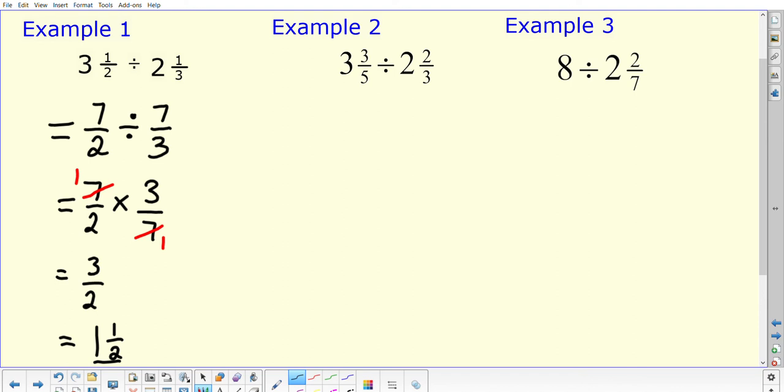With the second example, if you do the same thing, you can either pause the video again, have a go yourself and then come back in and check it. So you should have 3 times 5 is 15, plus the 3 would make that 18 over 5. You should still have that divide by sign going on there. You've got 2 times 3 is 6, add 2 means that it's 8 over 3.